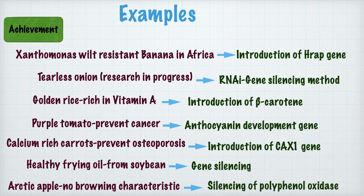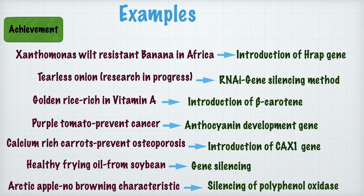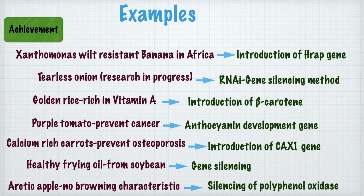Another example is purple tomato, which helps prevent cancer and was developed in Israel through an anthocyanin development gene. There is also calcium-rich carrot, useful to prevent calcium deficiency-related problems such as osteoporosis, developed through introduction of the CAX1 gene. Another is healthy frying oil from soybean, developed through gene silencing, with low saturated fat, low trans fats, no hydrogenation required, and highly stable during baking.